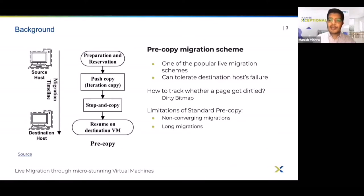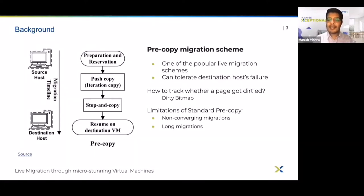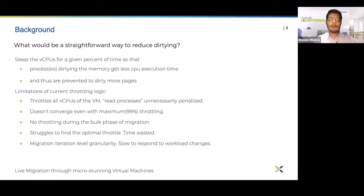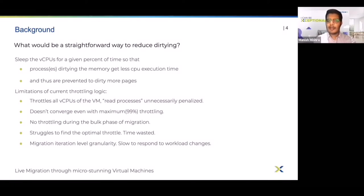In cases where dirty rate is more than network throughput, we depend on throttling to bring the dirty rate within limits. So how does the current throttling algorithm in QEMU work, and what are its limitations?